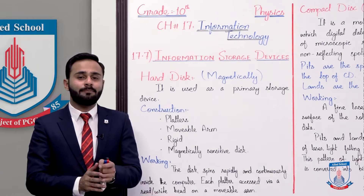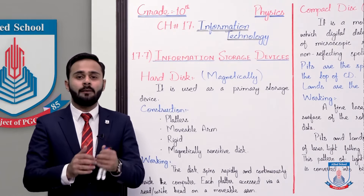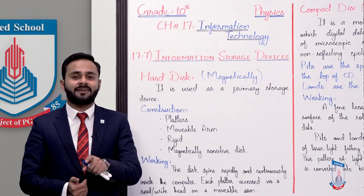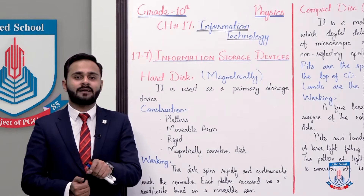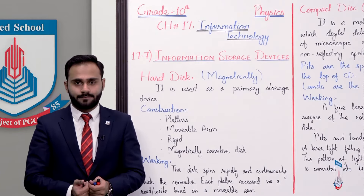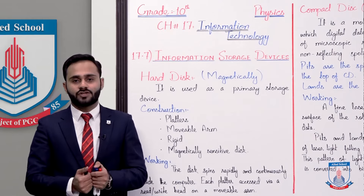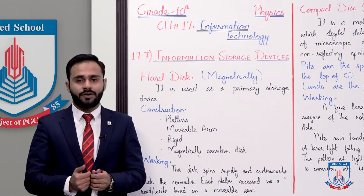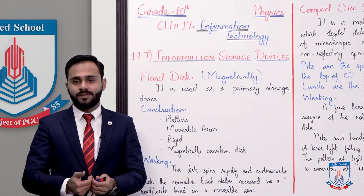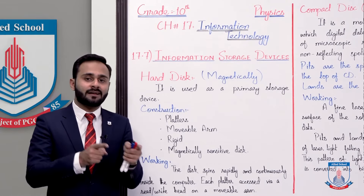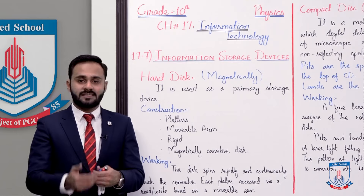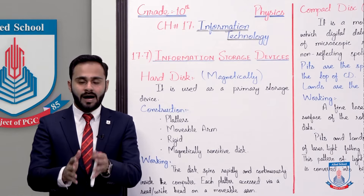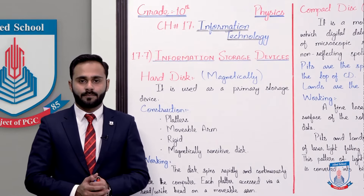Hard disk ek permanent storage device hai jisme hum data permanently store kar sakte hain. We discussed that the computer primary memory is ROM and RAM, and ROM and RAM cannot permanently store data. That's why computer mein hum hard disk use karte hain, which we can use to permanently store data. When we are using data it is in RAM, but for permanent storage we use the hard disk.